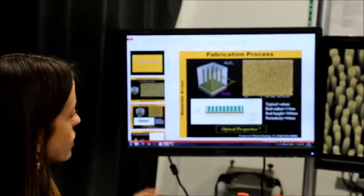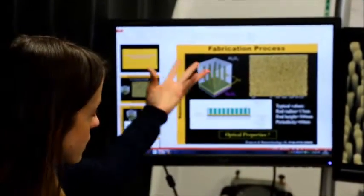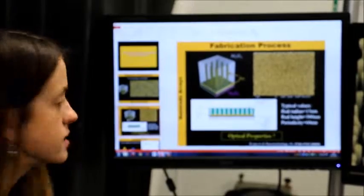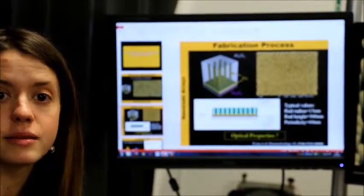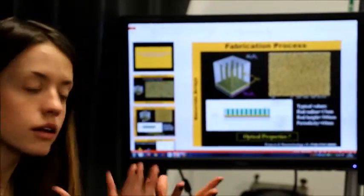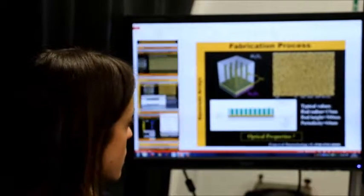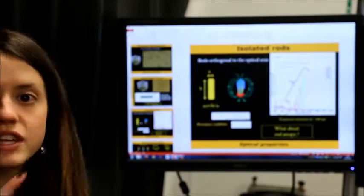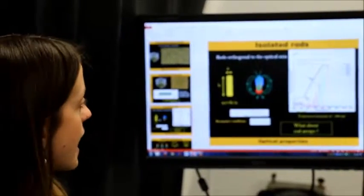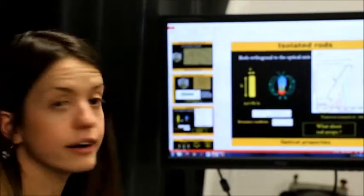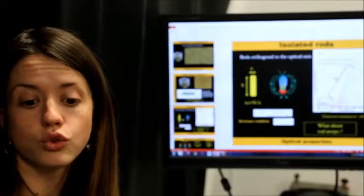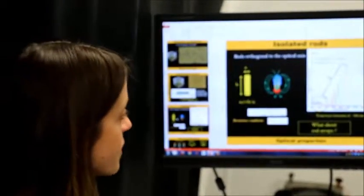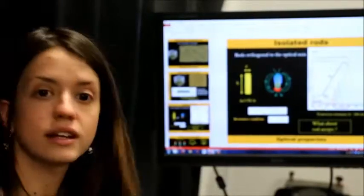So these gold nanorods are grown electrochemically into a matrix which is made of aluminum. It's a porous matrix in which then the gold can grow. So these individual nanorods, they have a characteristic response to an incident plane wave, to some incident light. And this is a resonant response.